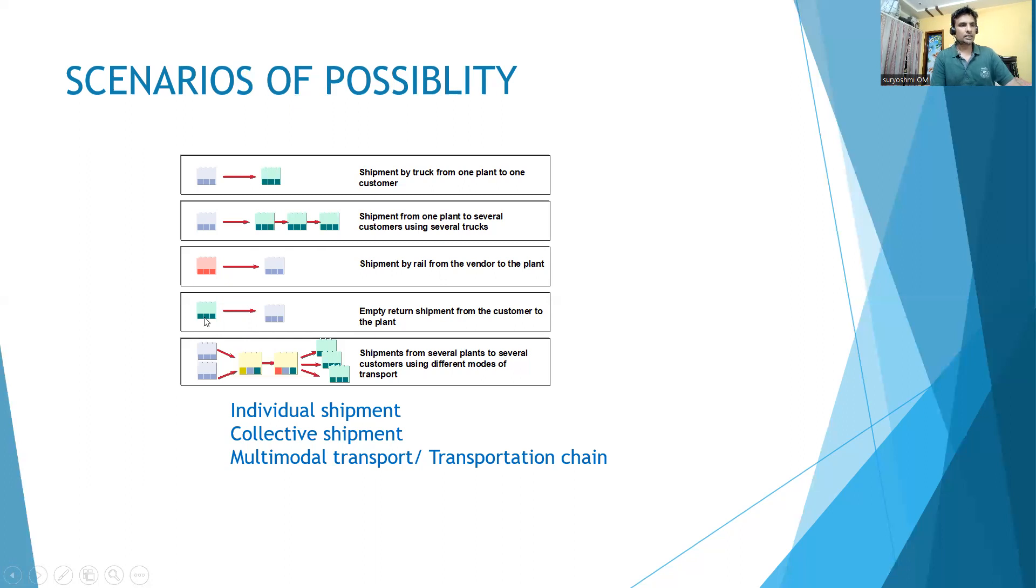Similarly, if the customer is returning stock because of any reason - maybe it is spoiled or demolished or blocked stock - the customer will do the empty return. Sometimes carton boxes or pallets have to be returned based on the agreement between customer and plant company. You can see these are from two plants to several customers.